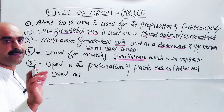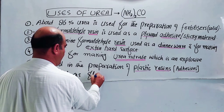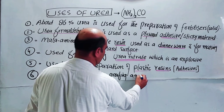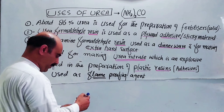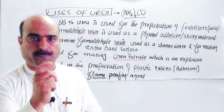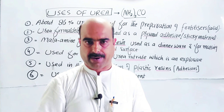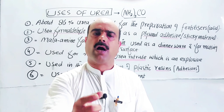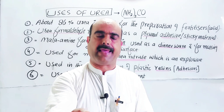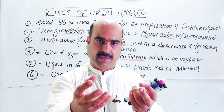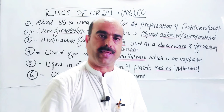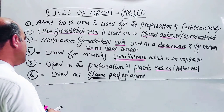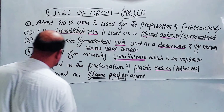Use number 6: urea is used as a flame-proofing agent or fire-proofing agent. A flame-proofing agent protects materials from fire and makes them resistant to flame. Just as fire-proofing material like china clay is used in furnaces and ovens, urea also acts as a flame-proofing agent to reduce the effect of fire.